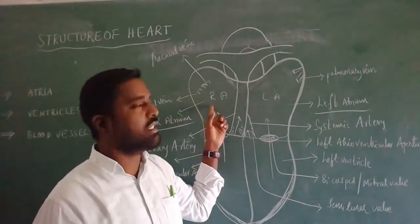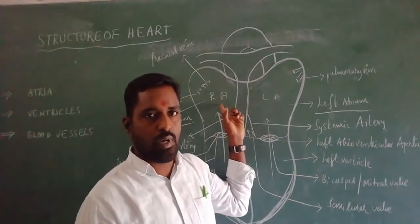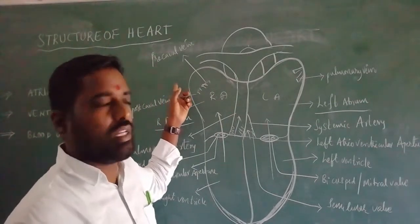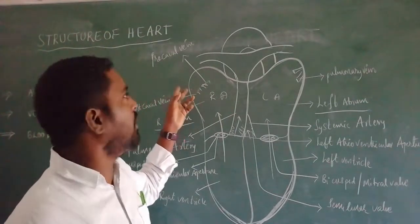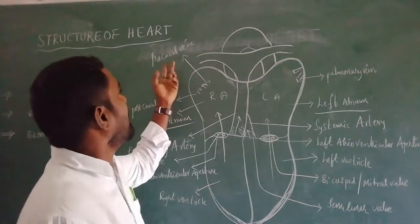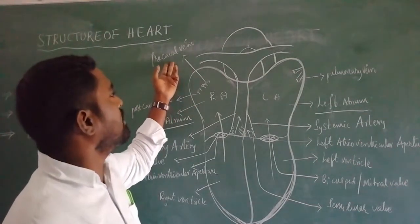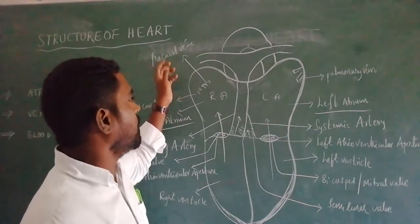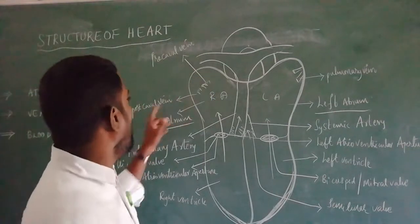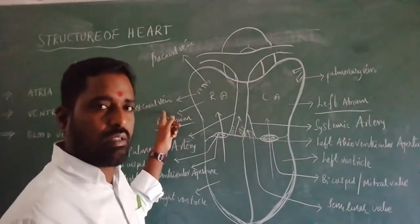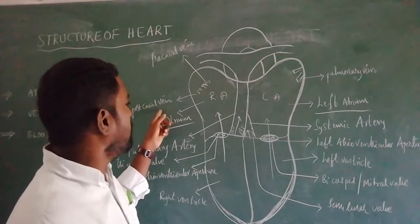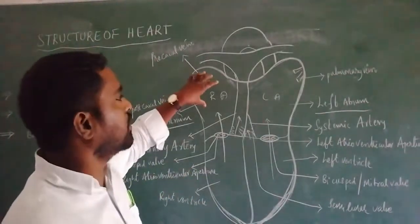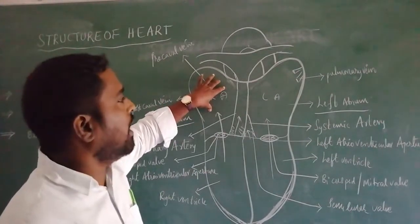The right atrium receives deoxygenated or impure blood from the body parts except the lungs, via the vena cava — the largest veins. A pair of pre-caval veins, or anterior vena cava, receives deoxygenated blood from the anterior parts of the body and brings it into the right atrium. The post-caval vein, or posterior vena cava, receives impure blood from the posterior parts of the body and brings it into the right atrium.